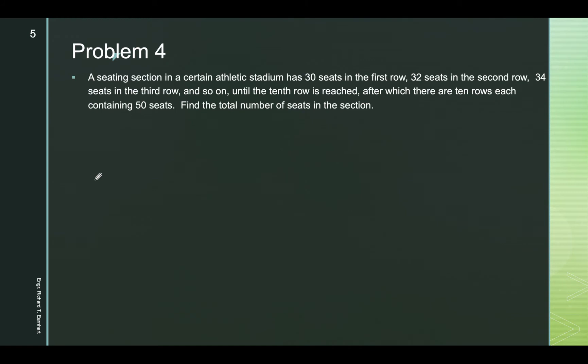A seating section in a certain stadium has 30 seats in the first row, 32 seats in the second row, 34 seats in the third row, and so on until the 10th row is reached, after which there are 10 rows each containing 50 seats. Find the total number of seats in the section.